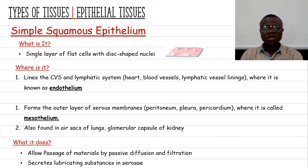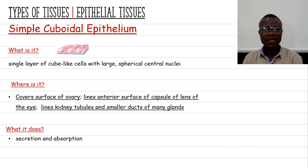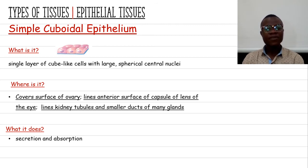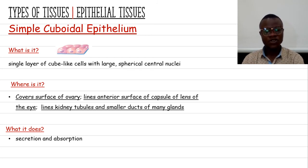Next is simple cuboidal epithelium. What is it? It is a single layer of cuboidal cells that have large, spherical nuclei. Where is it located? This epithelium usually covers the ovary, lines the anterior surface of the capsule of the lens of the eye, and is found in kidney tubules and smaller ducts of many glands. What does it do? Its basic functions are secretion and absorption.